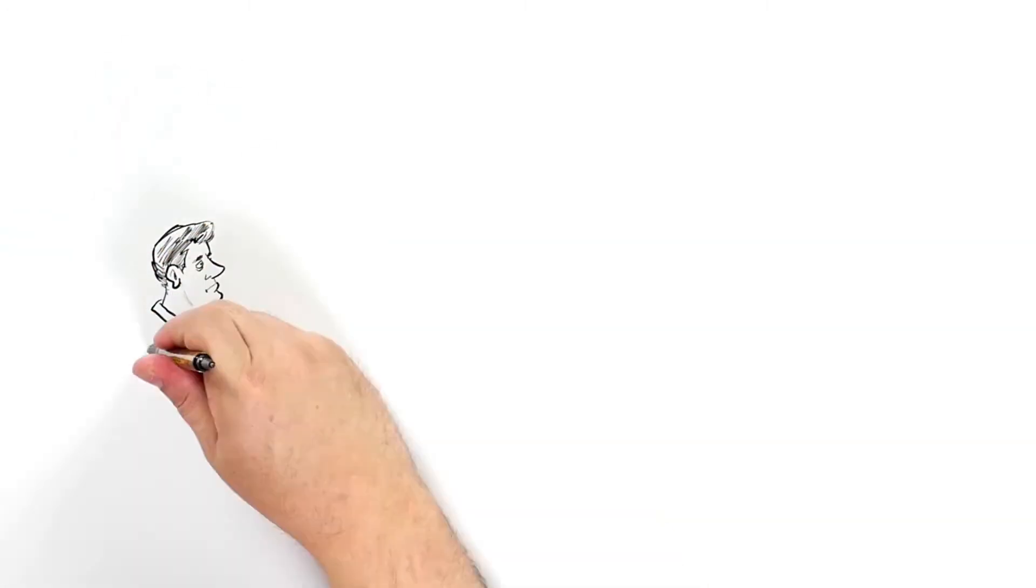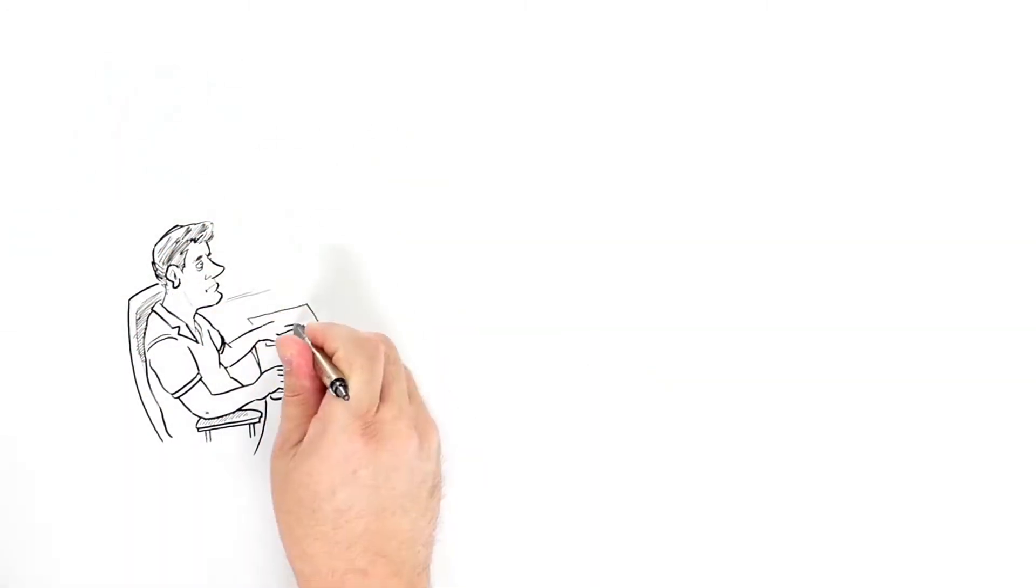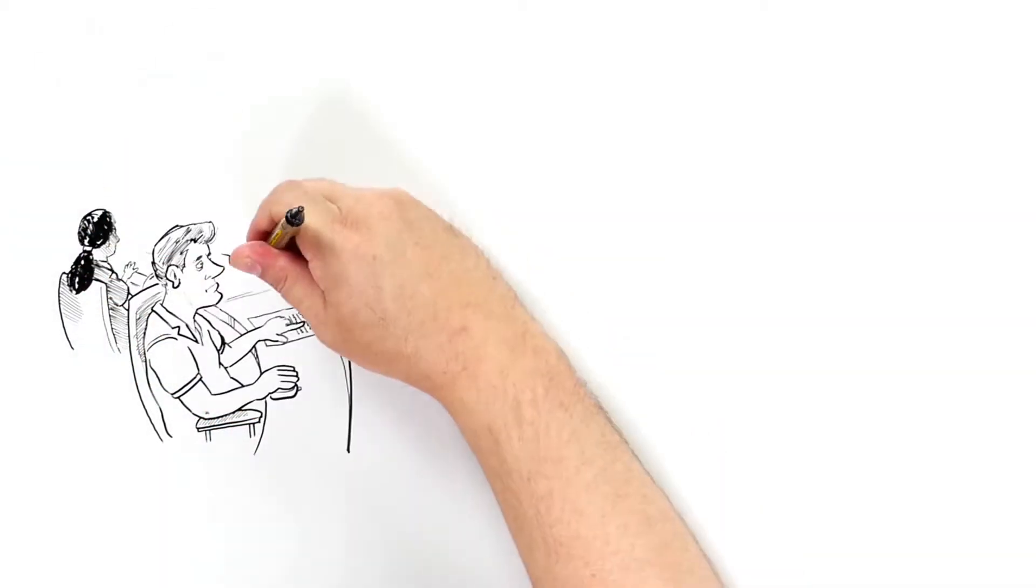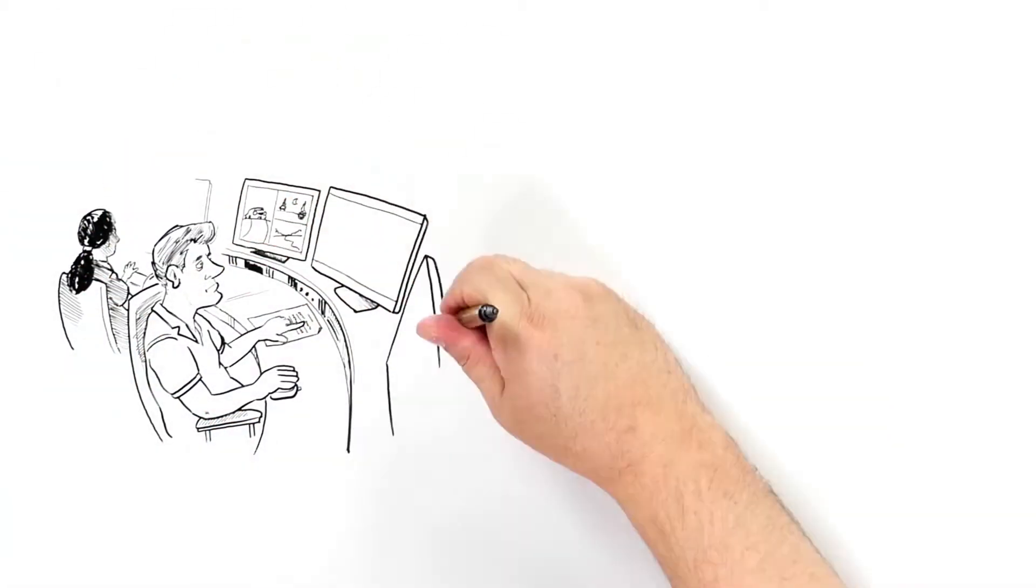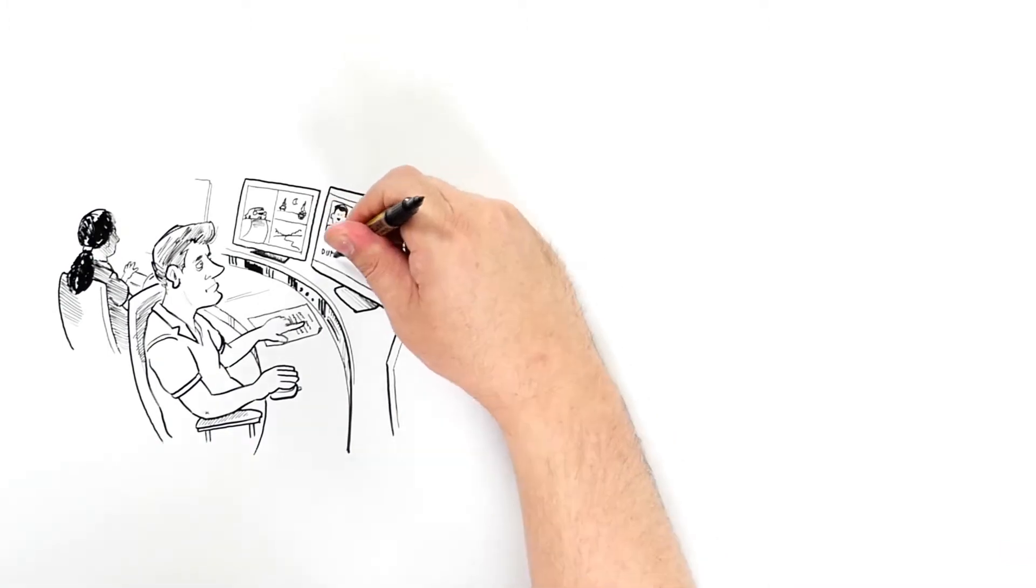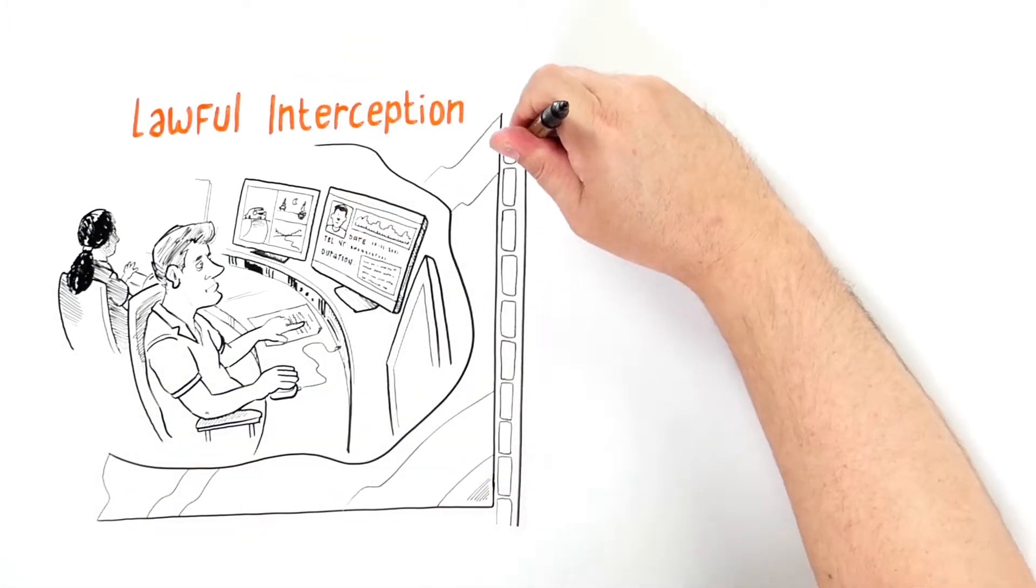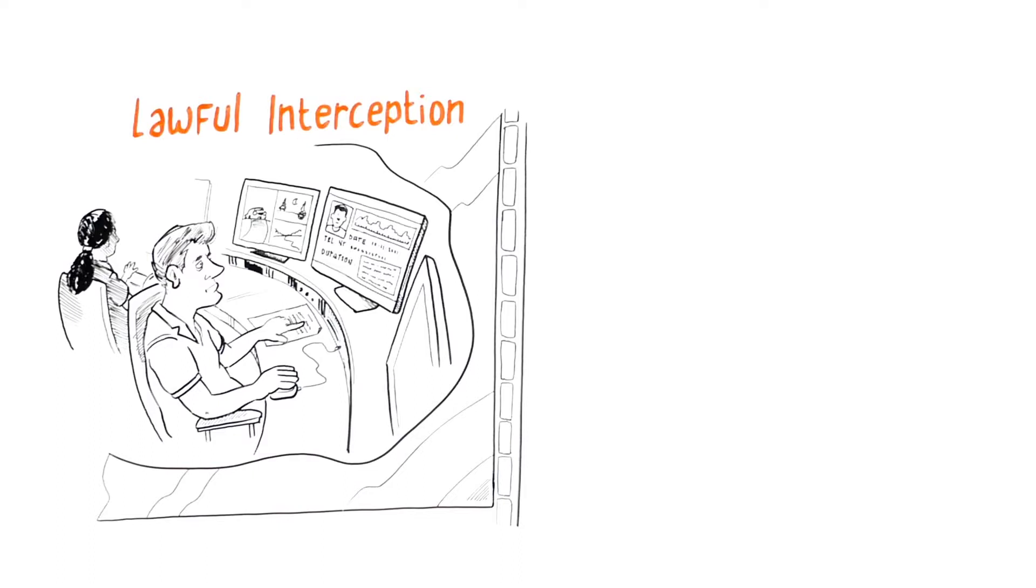One of the many important tasks of governments and intelligence agencies is to keep society safe from harm. A widely used instrument for supporting this mission is lawful interception, or in other words, interception of communication data.